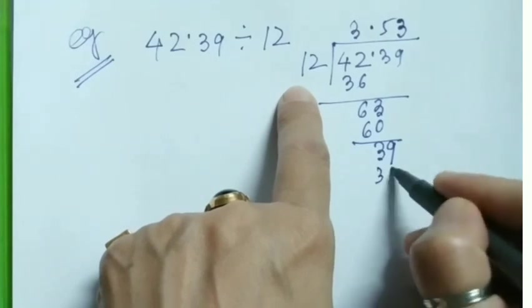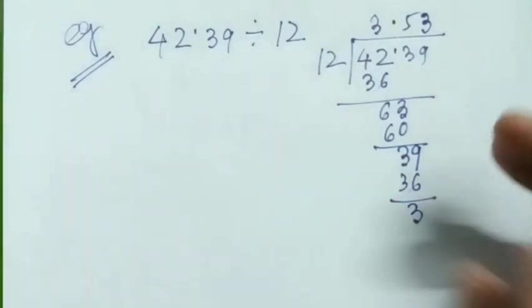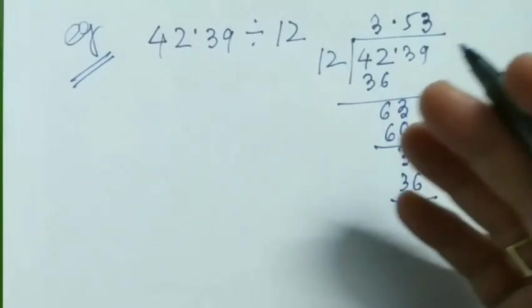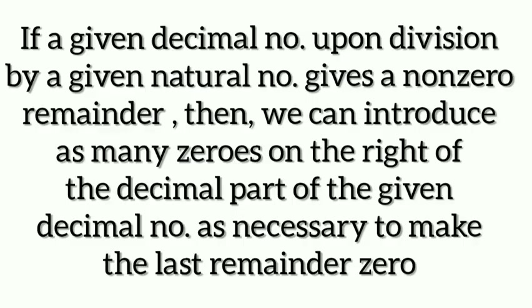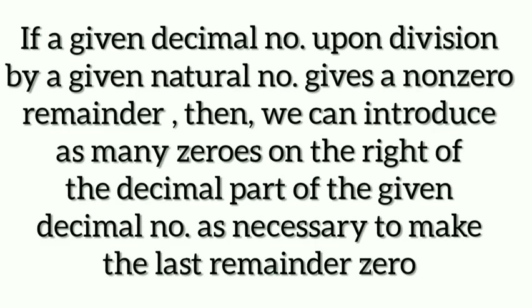Now I'm going to share a very important thing with you, so please listen carefully. If a given decimal number divided by a given natural number gives a non-zero remainder, then we can introduce as many zeros on the right of the decimal part as necessary to make the last remainder zero. But remember, only one zero at a time, otherwise for adding extra zeros we need to add zero in the quotient also.